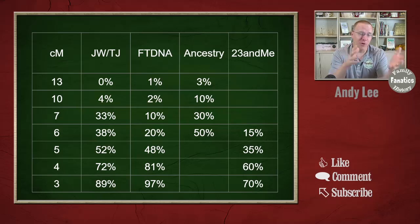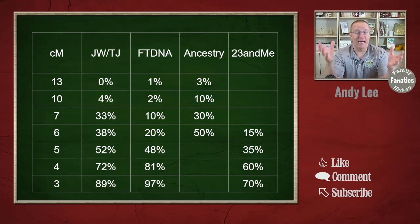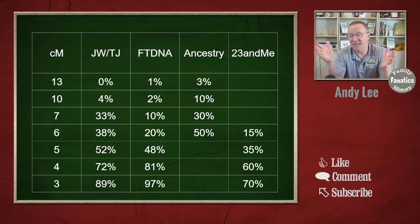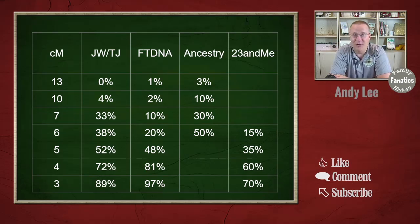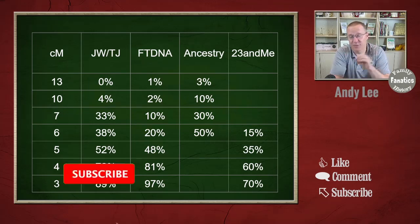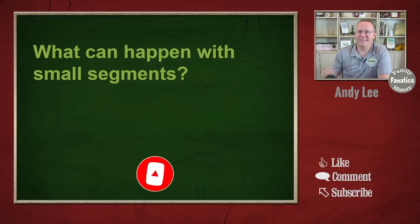The extra effort of sorting through these false segments means your genealogy work will be running down a lot of rabbit holes. Blaine Bettinger calls these false segments poison — I wouldn't go that far, but I would call them a total waste of time. At three centimorgans, if 97% is correct, you have to go through 33 false segments to find one true segment. If you spend an hour on each match, 32 of those hours were totally wasted.